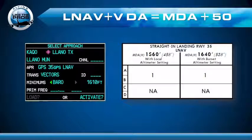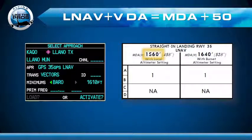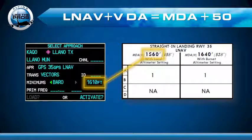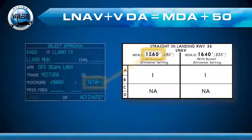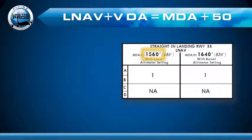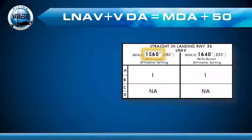For example, the straight-in LNAV minima for Runway 35 has an MDA of 1,560. Add 50 feet and you get a personal decision altitude of 1,610. Now, if the weather is such that you really need to descend to MDA to find the airport, then plan not to use glide path mode at all. Configure your autopilot for a non-precision approach by setting the altitude bug to MDA and descending on final using VS mode — the classic dive and drive.